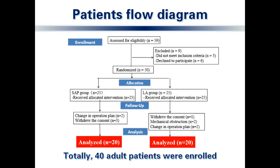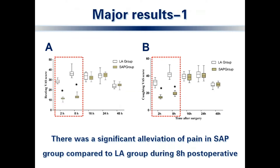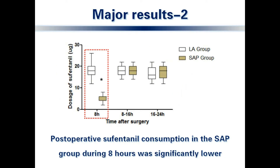There was a significant reduction in VAS score in the SAP group compared to the LA group, up to 8 hours postoperatively, whether at rest or on coughing. Postoperative sufentanil consumption in the SAP group during the 8-hour period was also significantly lower.